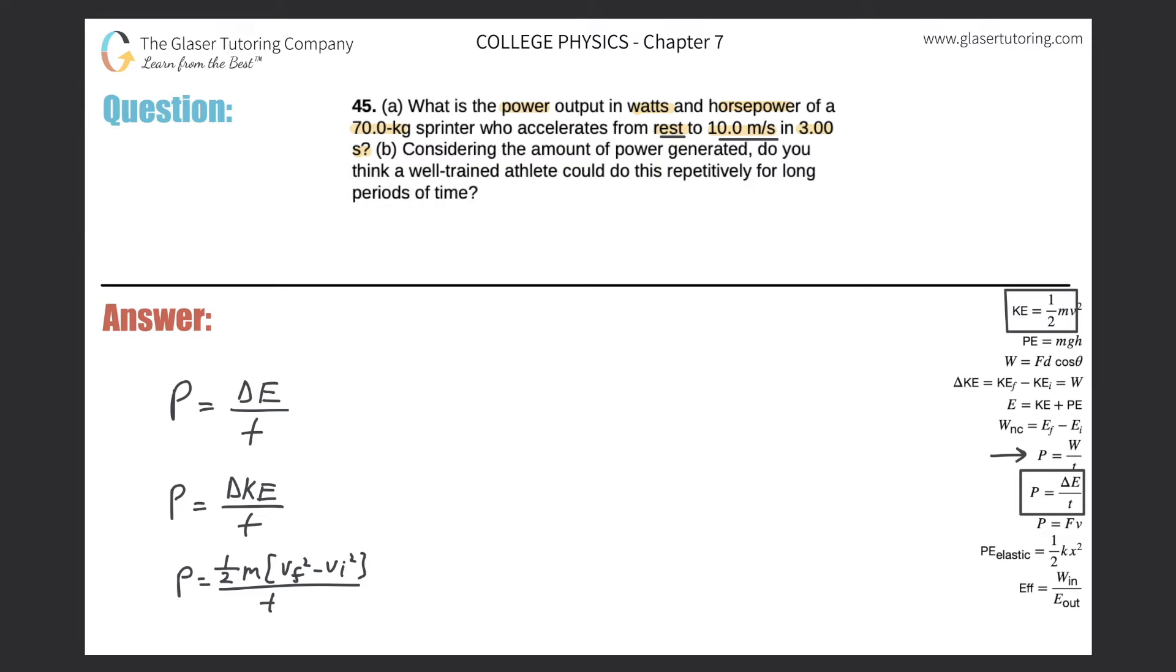Remember, change in kinetic energy can be rewritten as one half m times the final velocity squared minus the initial velocity squared, all over time. Let's just plug it all in. One half times the mass, 70 kilograms. The final velocity was 10 meters per second squared minus the initial was zero. Divide that by the time of three seconds.